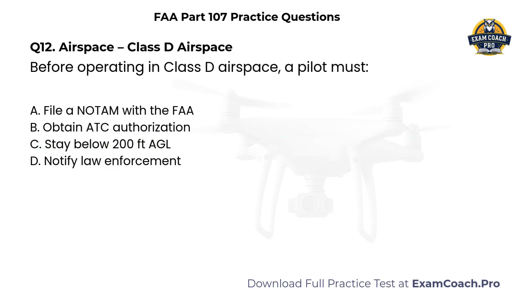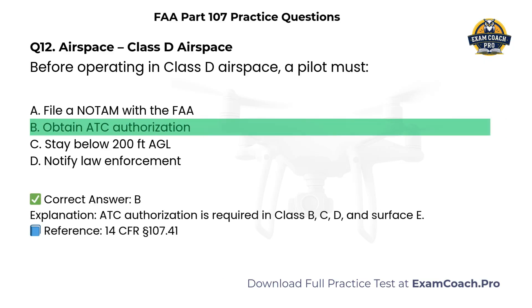Airspace. Class D. Before operating in Class D airspace, a pilot must: A. File a NOTAM with the FAA. B. Obtain ATC authorization. C. Stay below 200 feet AGL. D. Notify law enforcement. Correct answer: B. ATC authorization is required in Class Bravo, Charlie, Delta, and Surface Echo airspace.